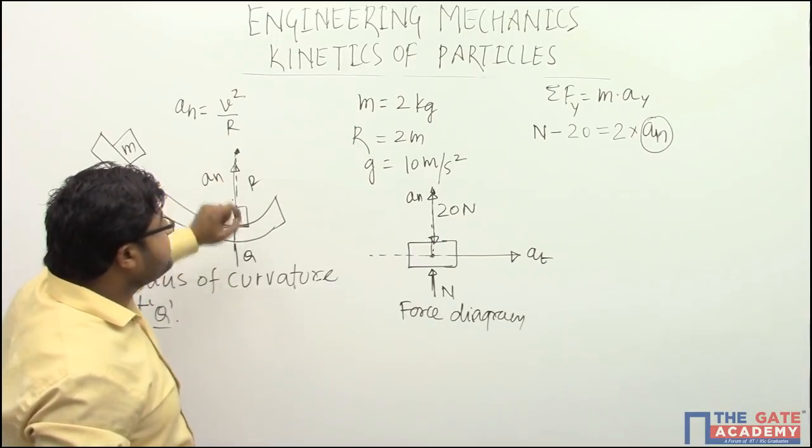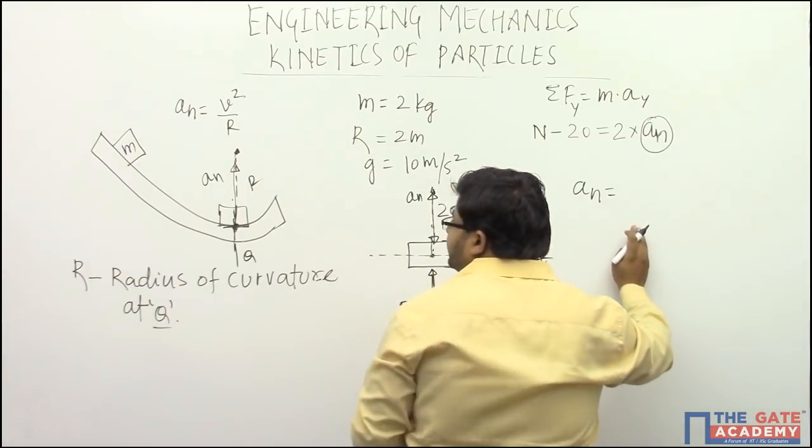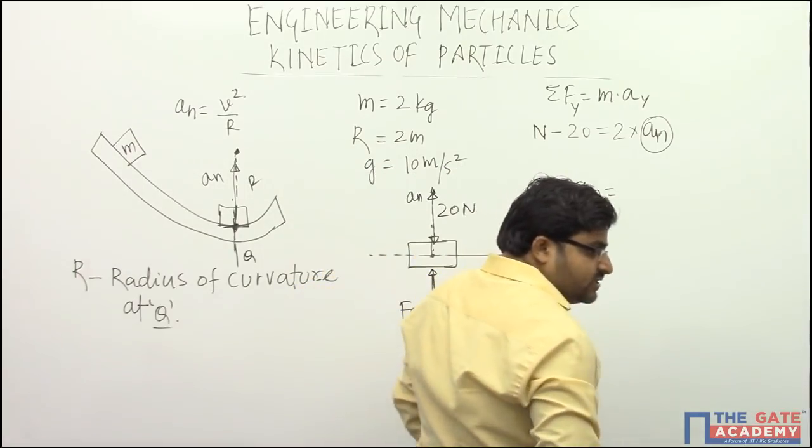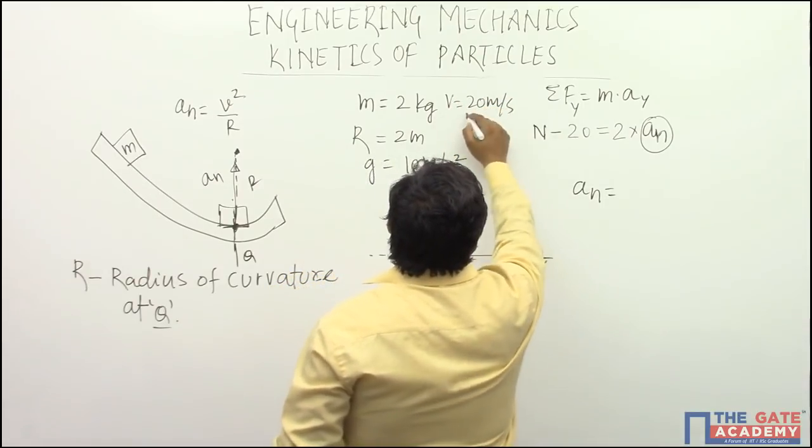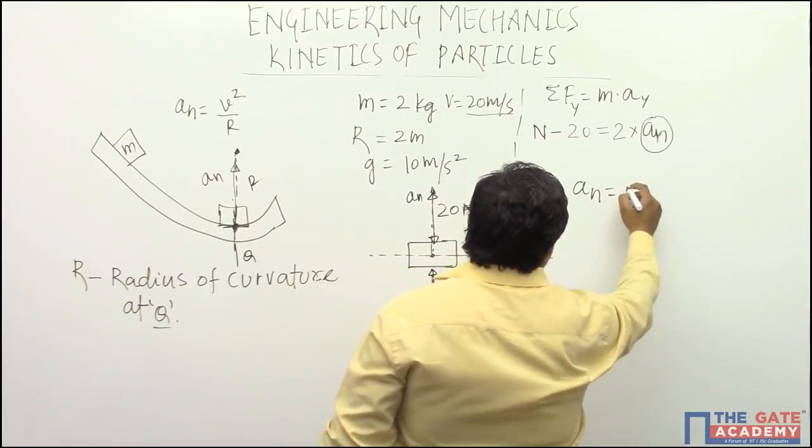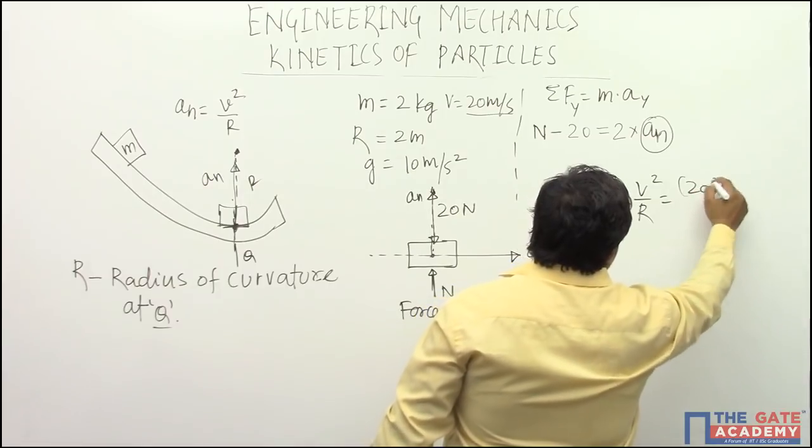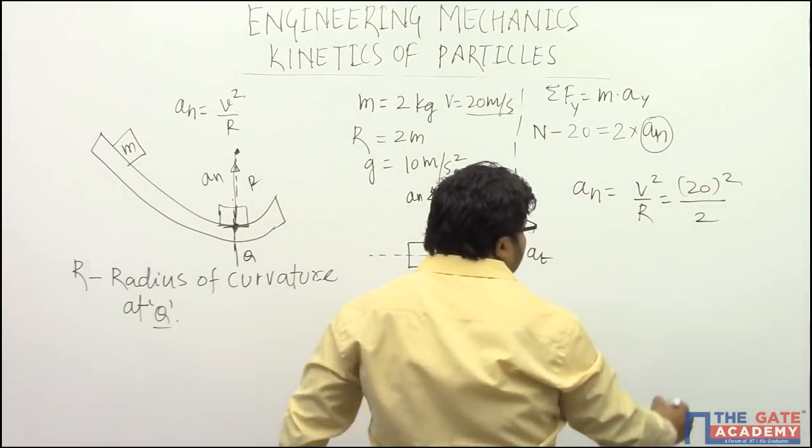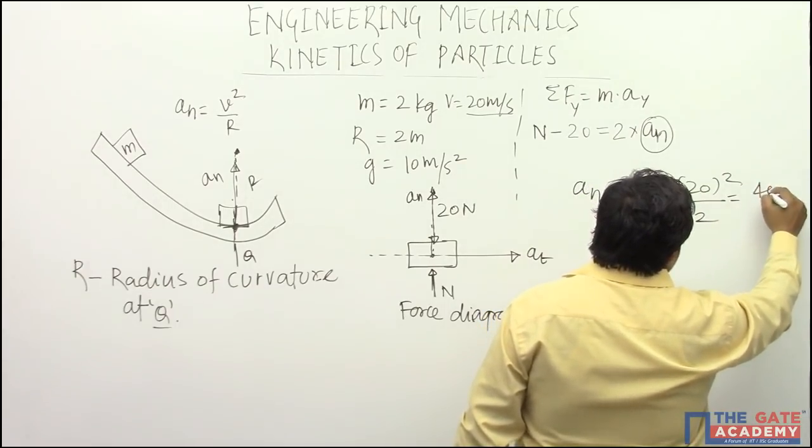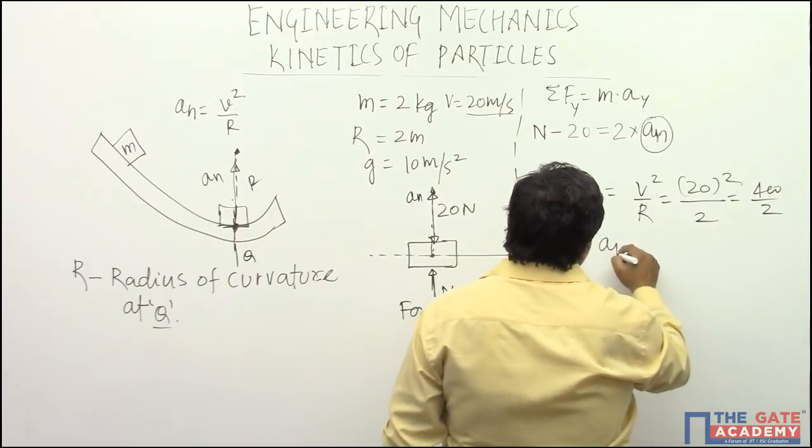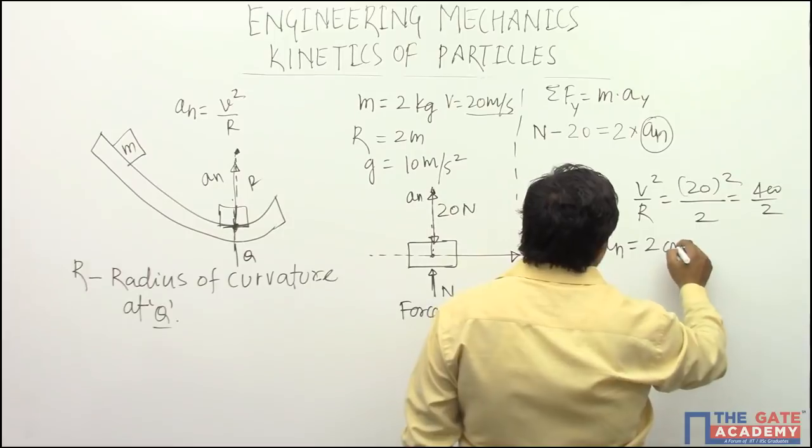So at point Q, the radius of curvature is already given. We will write a_n value equals velocity, velocity is given as 20 meter per second. So we can put that value, v square by r will be equals to 20 square by radius of curvature is 2 meter. So it will be 400 by 2. That is a_n will be equals to 200.